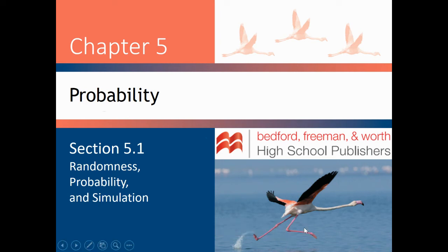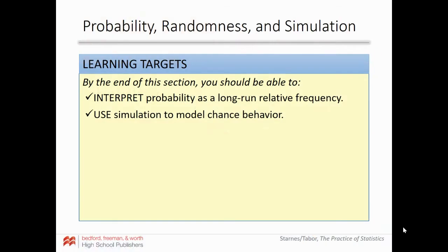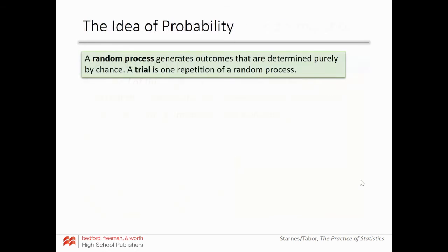Alright, hello everyone. We are looking at Chapter 5 now, which is probability. This section is 5.1 on randomness, probability, and simulations. There are only two learning targets today. First, you should be able to interpret probability as a long-run relative frequency, and use simulation to model chance behavior. A random process generates outcomes that are determined purely by chance, and a trial is one repetition of a random process.